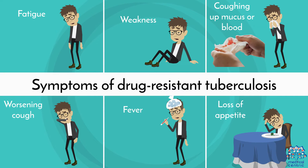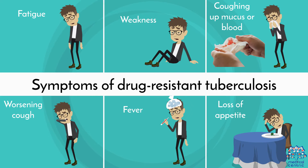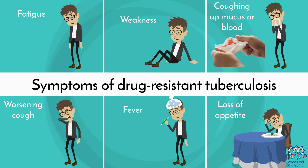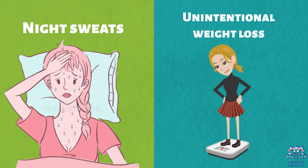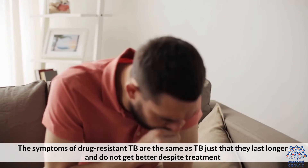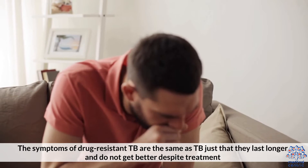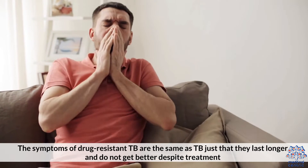Symptoms of drug-resistant tuberculosis include fatigue, weakness, coughing up mucus or blood, a worsening cough that lasts about three weeks, fever, loss of appetite, night sweats, and unintentional weight loss. The symptoms of drug-resistant TB are the same as regular TB — they just last longer and do not get better despite treatment.